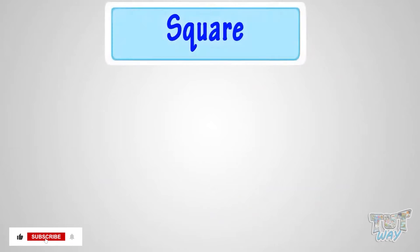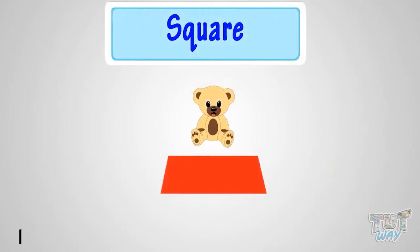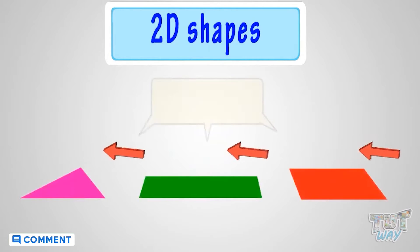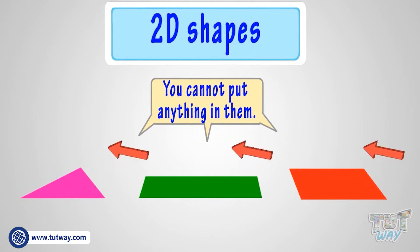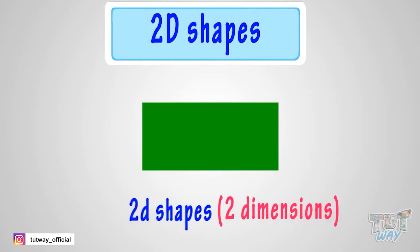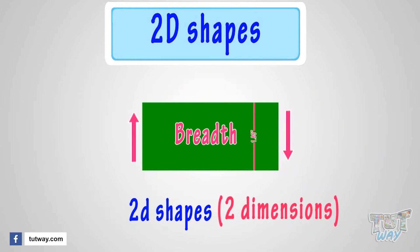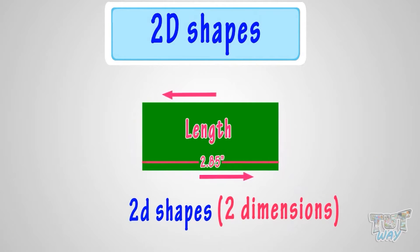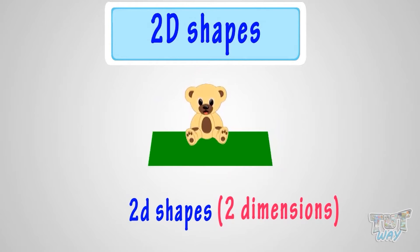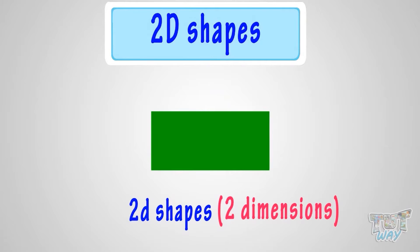Kids, can you put anything in this shape? Think. No, you cannot put anything in this shape. Such shapes where you cannot put anything in them are 2D shapes. They are so-called because they have only two dimensions, that is, breadth and length. We have learned that 2D shapes are those shapes where we cannot put anything in them, and they have only two dimensions, length and breadth.